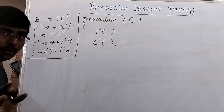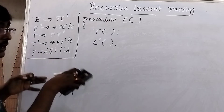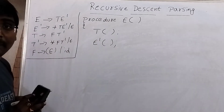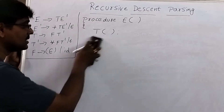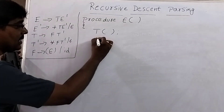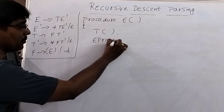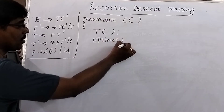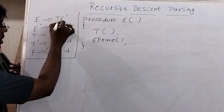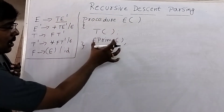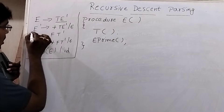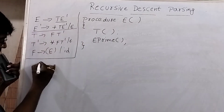Dashes are represented as prime. So E-dash is written as E prime. In programming it is not possible to represent the dash, so dashes are represented as E_prime(). Now close the procedure. We have two non-terminals, so we call both. Procedure E is completed; now move to the second one.